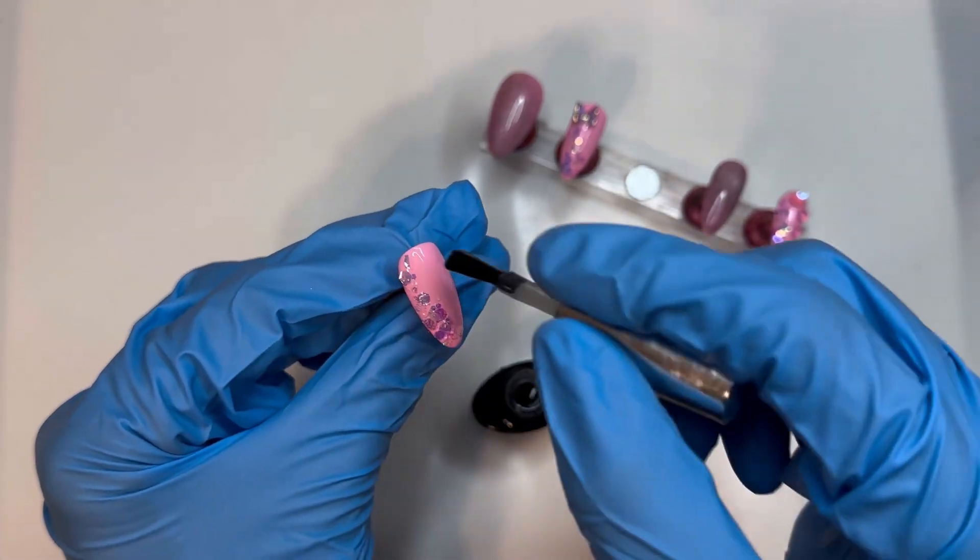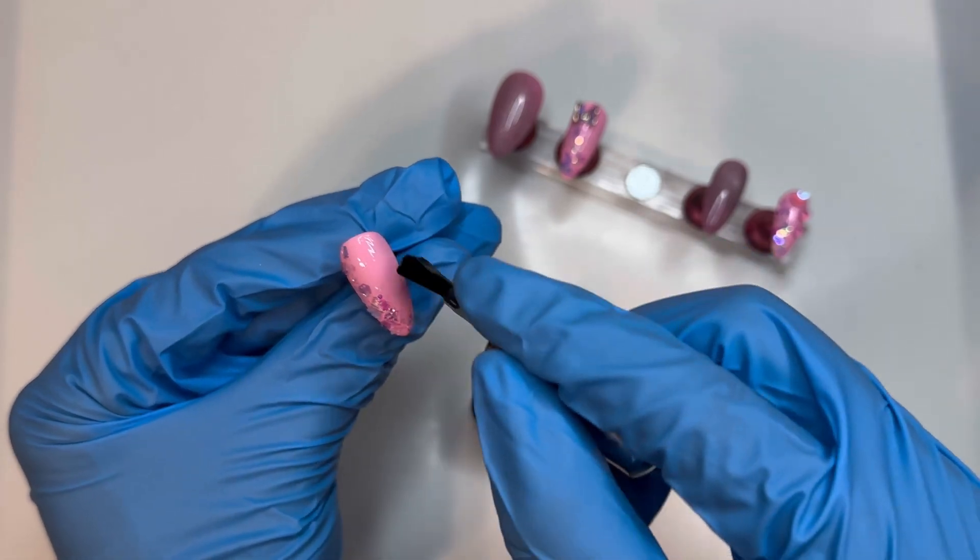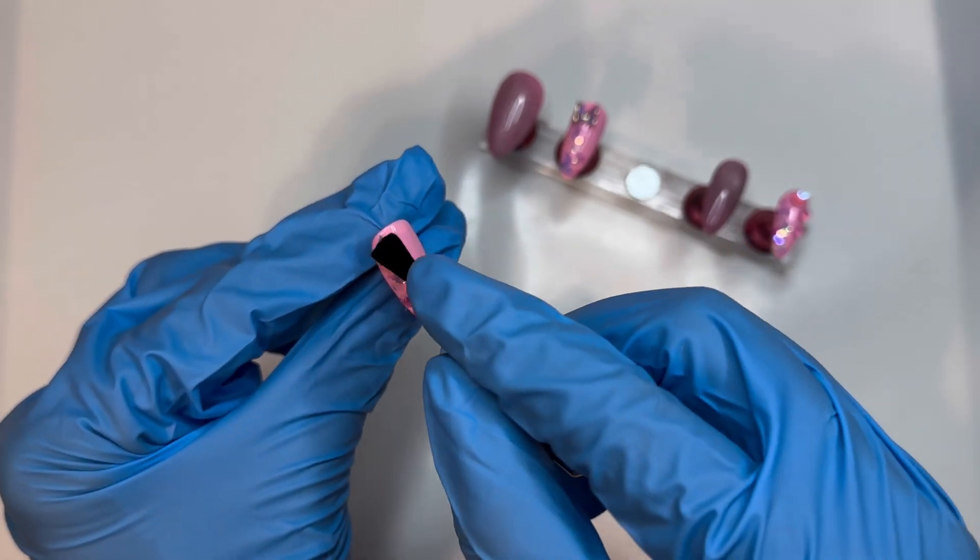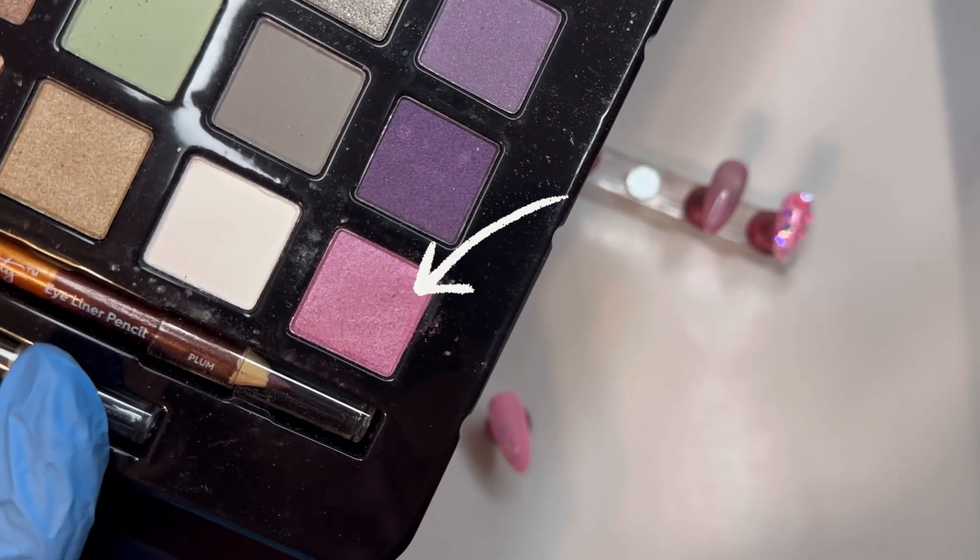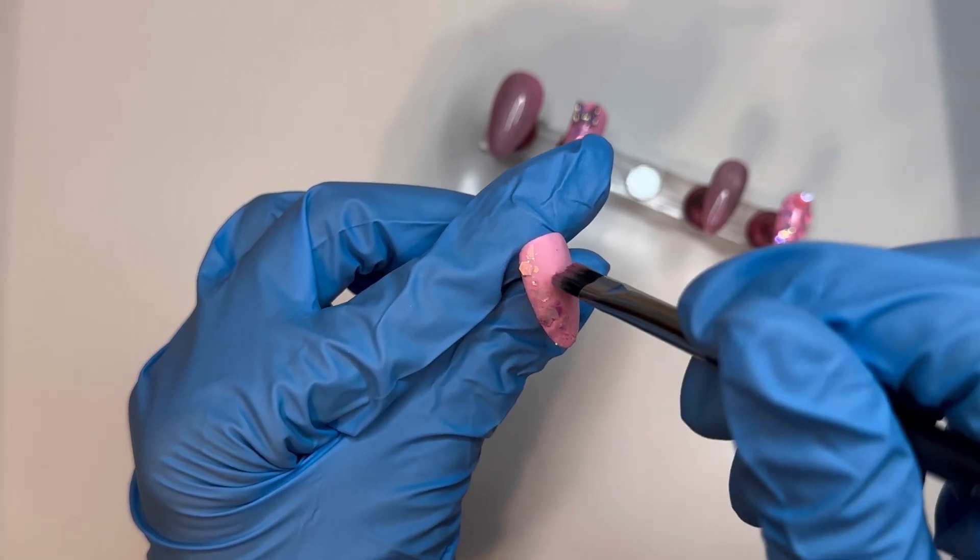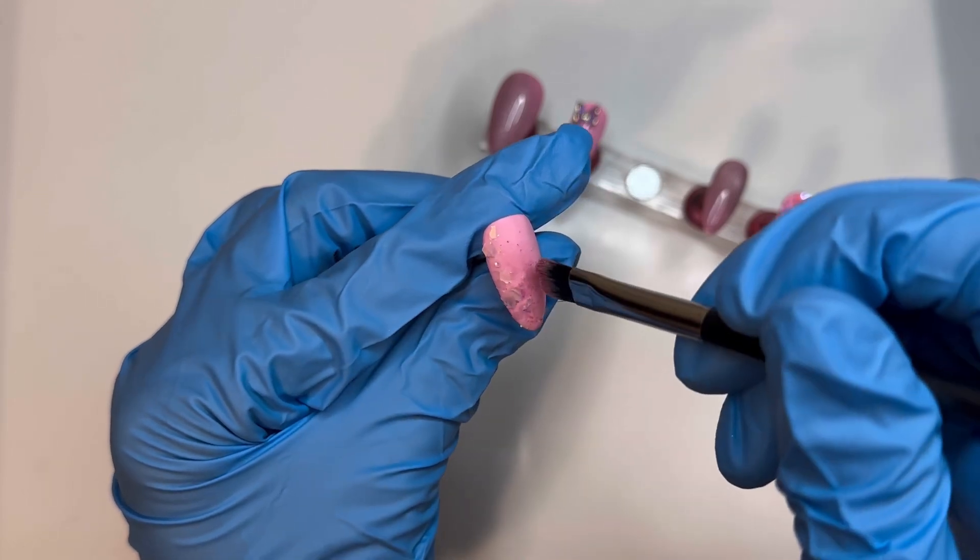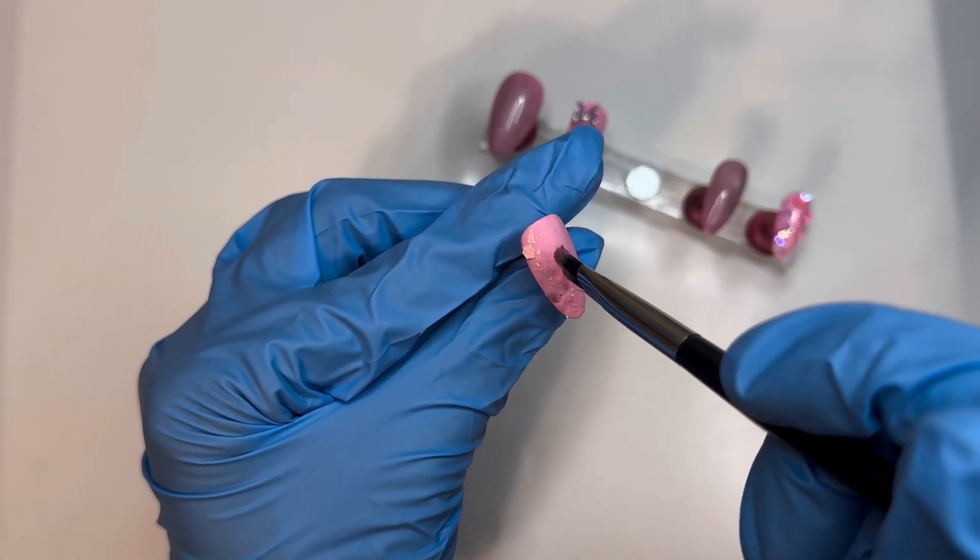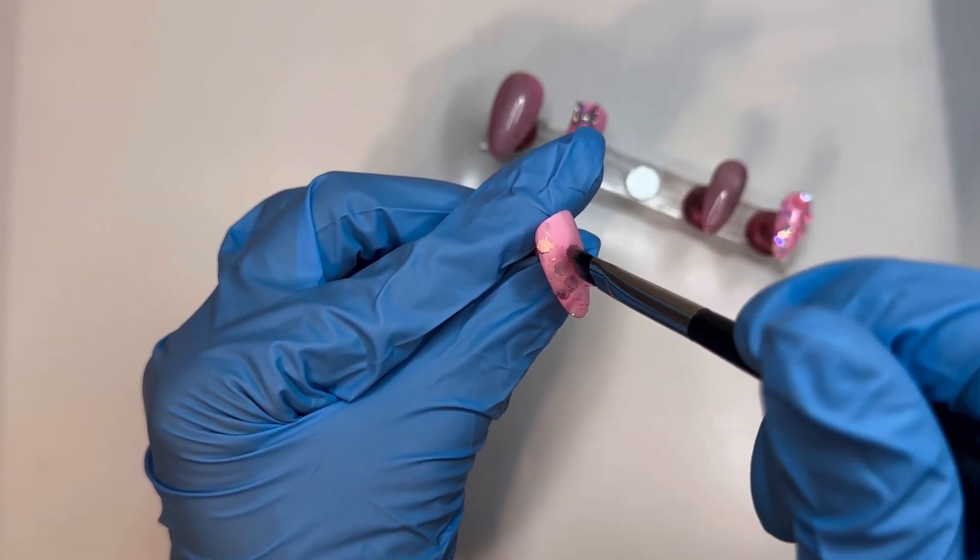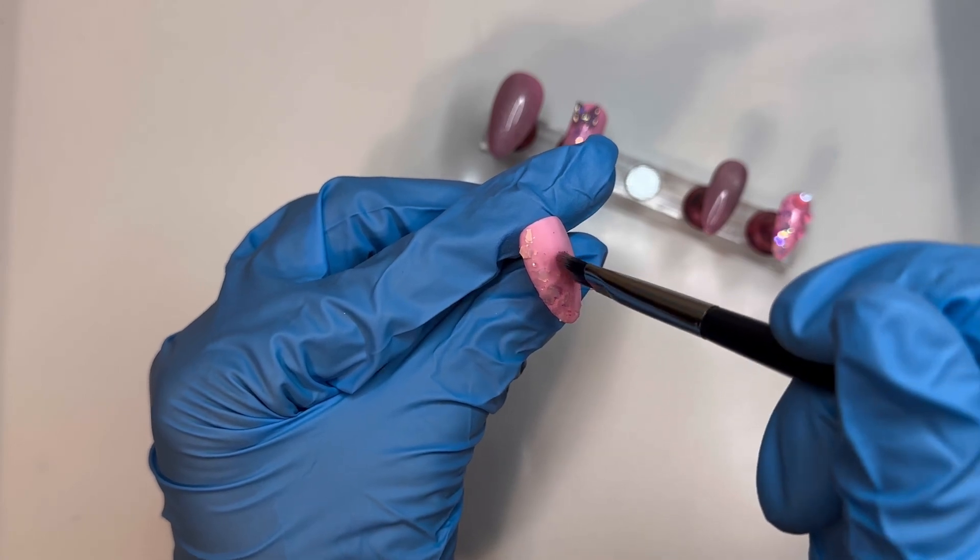For the middle fingernail, I'm going to be doing an aura effect using matte top coat and some eyeshadow. I did do one layer of matte top coat, I cured it, and then I started to pat on some eyeshadow. I did cure in between each layer. I'm not sure if that's necessary for this technique, but I just went ahead and did it just in case.